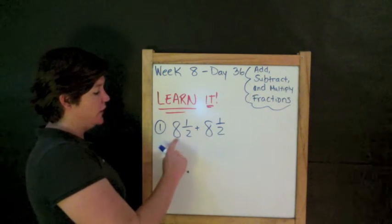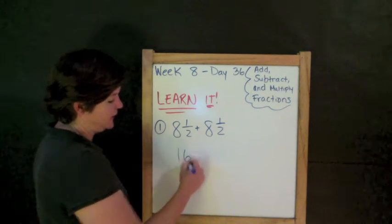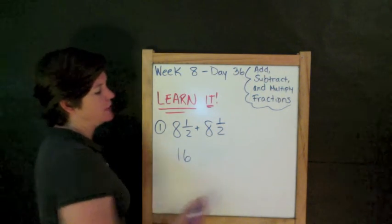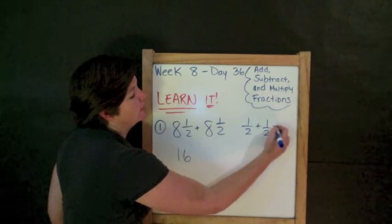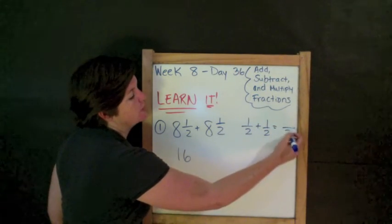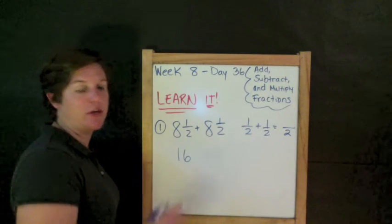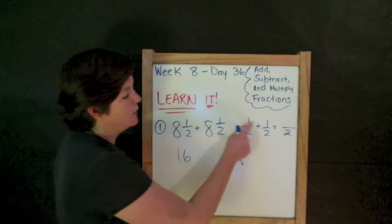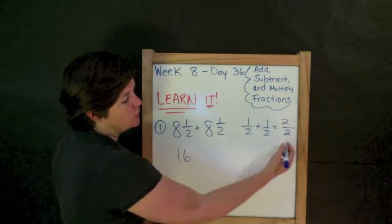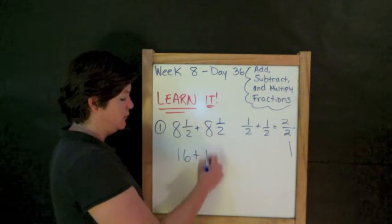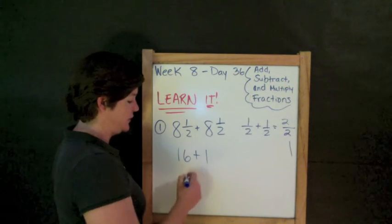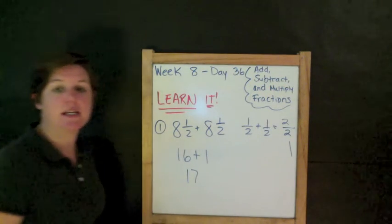So, 8 plus 8 is 16. And now I'm going to multiply my fractions. I'm going to do that out here. ½ plus ½. Now, my denominators are going to match, so it's going to just slide across and be 2. But 1 plus 1 is 2. And 2 over 2 is equal to 1. So, 16 plus 1 equals 17. All right.